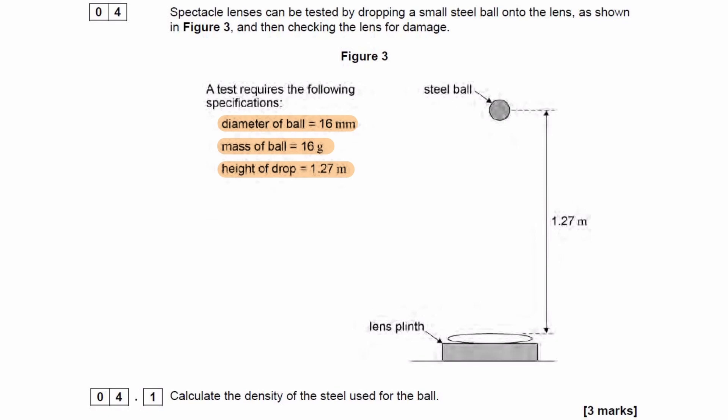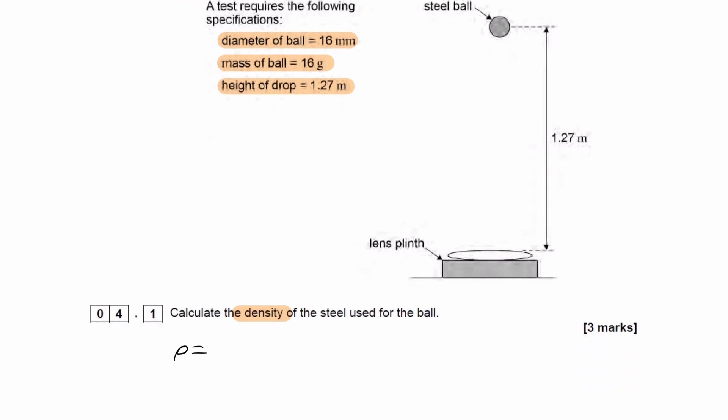So for 4.1, we're trying to work out the density of the steel used for the ball. Density is equal to mass over volume. So then we have the mass, the mass is given to us, that's 16 grams, so that'll be 0.016 kilograms by dividing by 1,000.